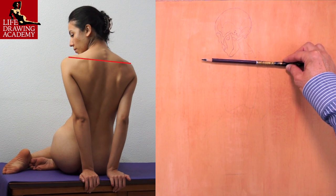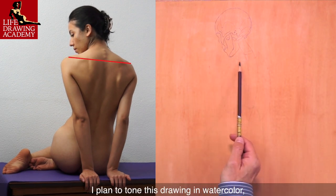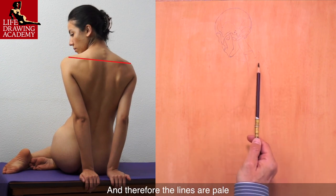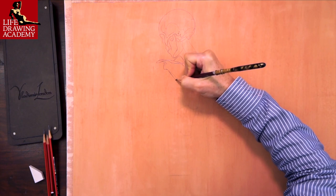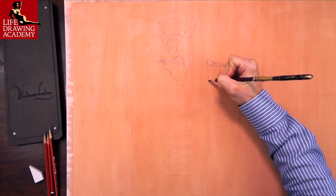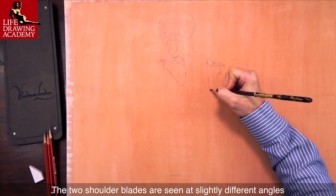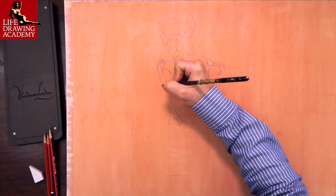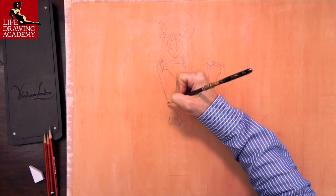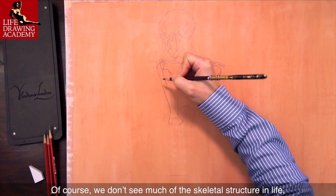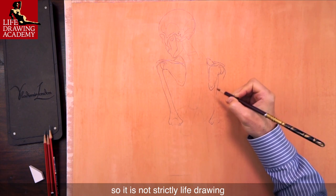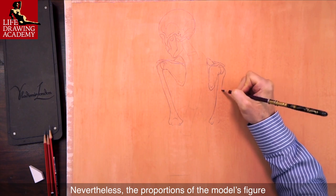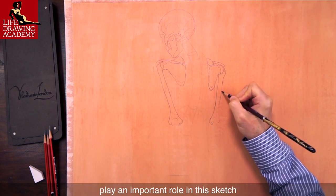The level of the shoulders is tilted. I plan to tone this drawing in watercolor, so going bold in pencil is not what I want at this step, and therefore the lines are pale. The two shoulder blades are seen at slightly different angles because of the curvature of the ribcage, and the right one is slightly foreshortened. We don't see much of the skeletal structures in life, so it is not strictly life drawing as most of it is done from imagination. Nevertheless, the proportions of the model's figure play an important role in this sketch.